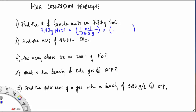Then we need to convert to formula units of sodium chloride. Since sodium chloride is an ionic compound, the formula unit is the representative particle. There are always 6.02×10²³ representative particles in a mole, so there are 6.02×10²³ formula units in one mole. We take 7.77 divided by 58.5 times 6.02×10²³. You should get an answer of 8.00×10²² formula units.